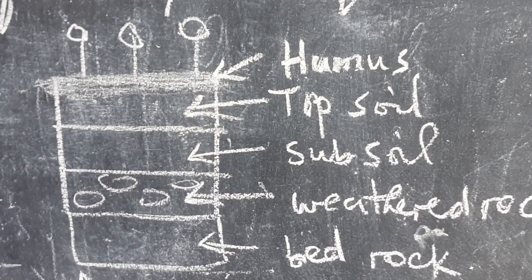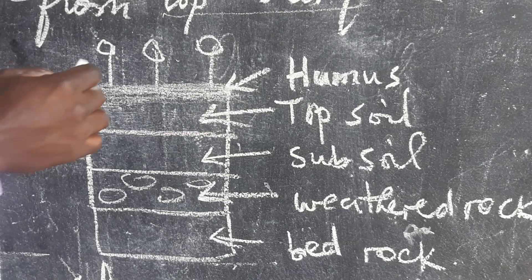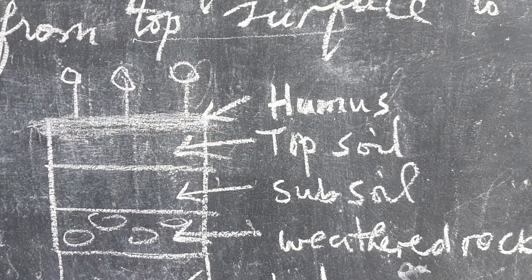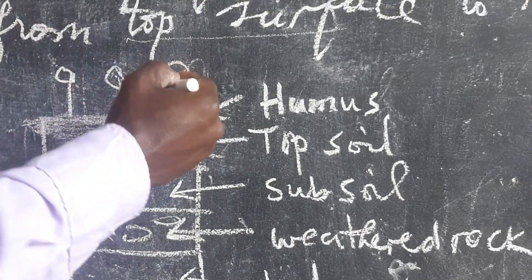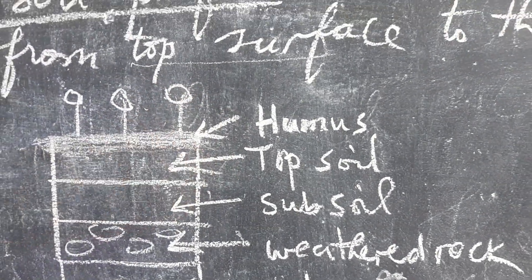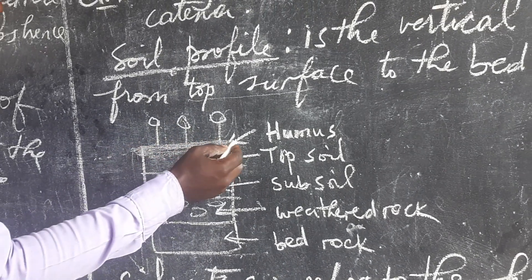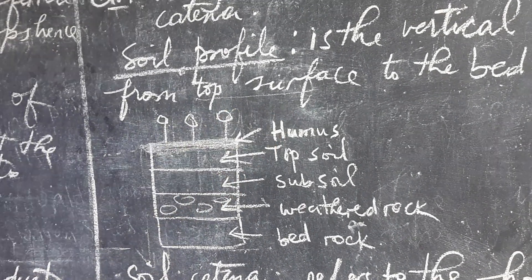So this is the surface of the earth. On the surface of the earth, there are different types of plants. And those plants, when the leaves of those plants fall down, they can lead to the formation of humus. Where those leaves are decomposed, then they form humus.